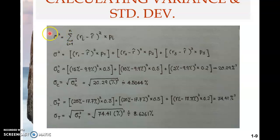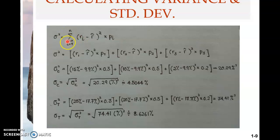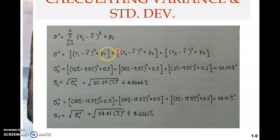The formula I prefer: sigma squared equals the summation from i equals 1 to n of (R_i minus R-hat) squared, multiplied by P_i. When you expand the summation for three states, you get three components: the first is (R1 minus R-hat) squared times P1, plus (R2 minus R-hat) squared times P2, plus (R3 minus R-hat) squared times P3.